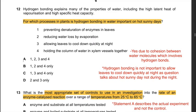Question 12: Hydrogen bonding explains many properties of water. For which processes in plants is hydrogen bonding important on hot sunny days? Statement 4 - holding the column of water in xylem vessels together through cohesion involving hydrogen bonding - is obviously correct. Statement 3 - allowing leaves to cool down quickly at night - is incorrect because the question refers to hot sunny days, not night. Statements 1, 2, and 4 are all valid. Hence the answer is B: 1, 2, and 4 only.